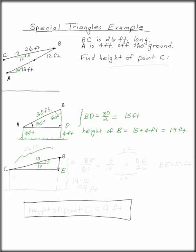BC was given as 26 feet. BE over BC is going to be the same as 5 over 13. BE over 26, this is times 2, so this has to be times 2. BE is 10 feet.